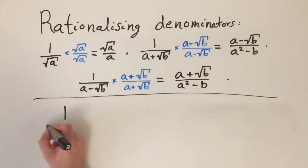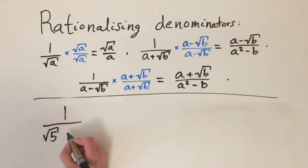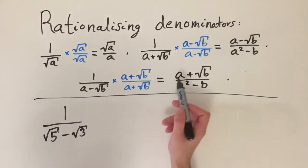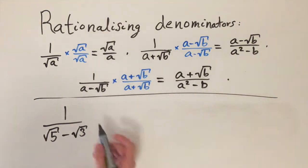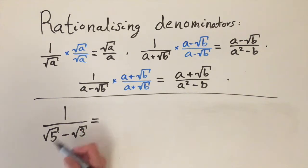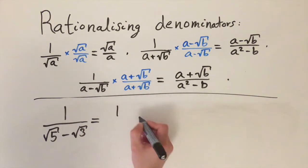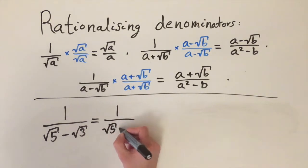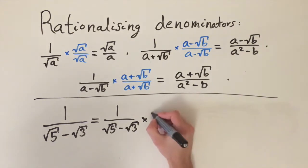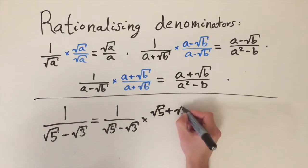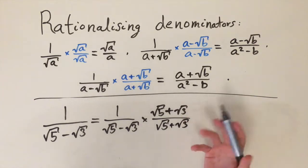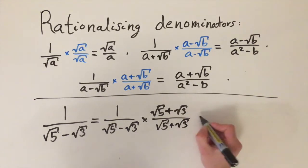Let's do one final, slightly harder example: 1 divided by the square root of 5 minus the square root of 3. Now we have two different irrational numbers, so this doesn't directly match our formulas. However, we use exactly the same method — it works for any combination of irrational numbers. We take the number 1 divided by the square root of 5 minus the square root of 3 and multiply top and bottom by the square root of 5 plus the square root of 3 divided by the square root of 5 plus the square root of 3. This is multiplying by 1, so we're not changing the value.